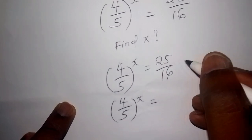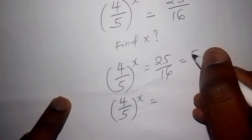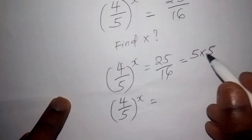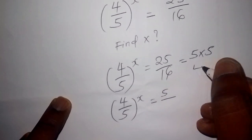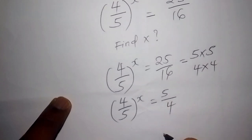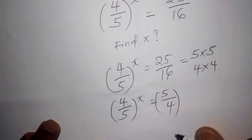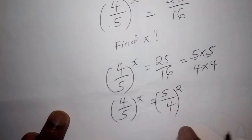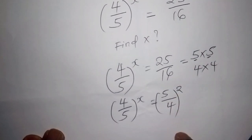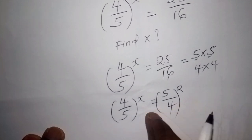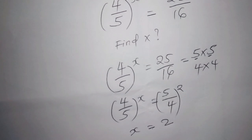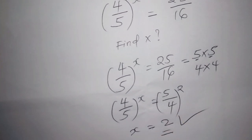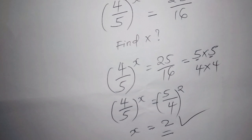For 25, we have five multiplied by five; for 16, we have four multiplied by four. So 25 over 16 equals five squared over four squared, which equals five over four to the power of two. Since four over five to the power of x equals five over four to the power of two, we pick the powers: x equals two. If you got x equals two, thumbs up!